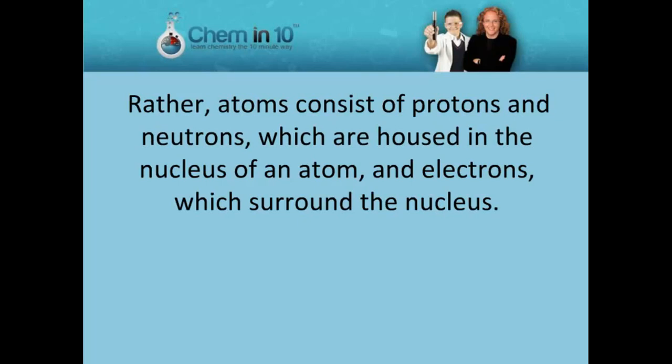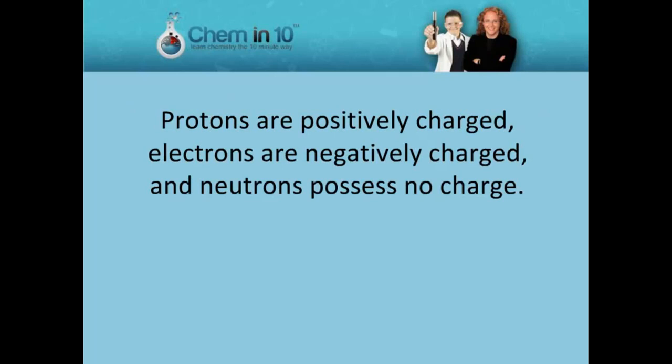Atoms consist of protons and neutrons, which are housed in the nucleus of an atom, and electrons, which surround the nucleus. Protons are positively charged, electrons are negatively charged, and neutrons possess no charge.